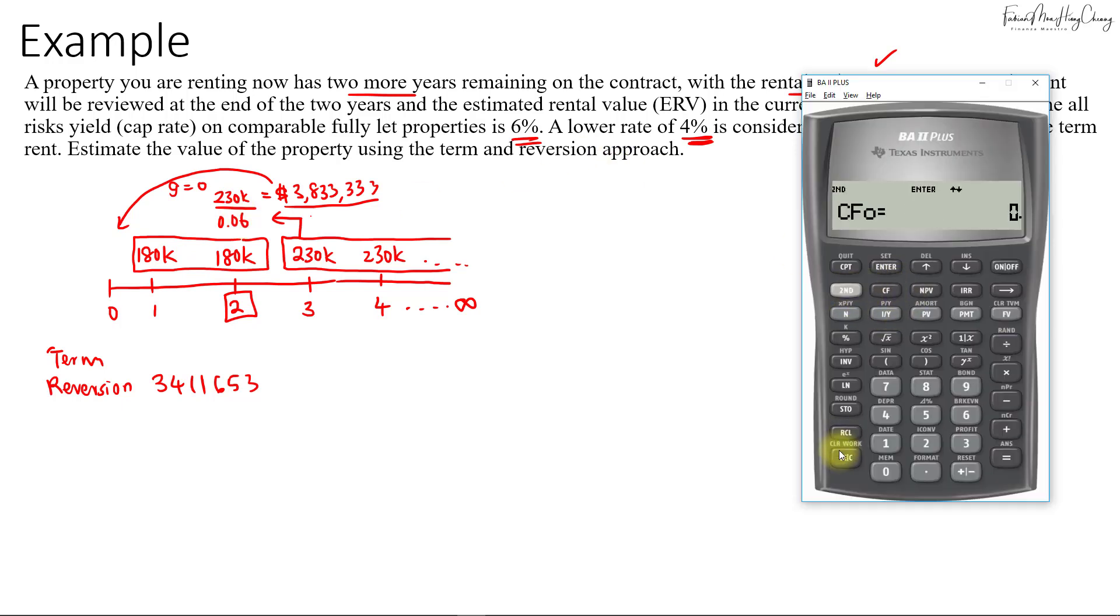So you can do this using your cash flow worksheet. So that's $180,000 for 2 years, NPV i equals 4% cap rate. Then NPV is $339,497.